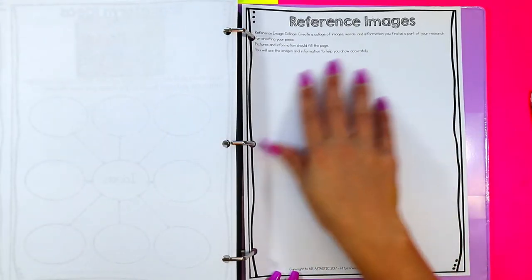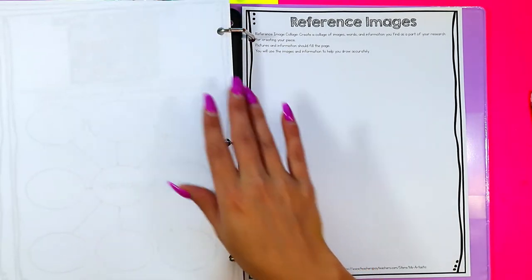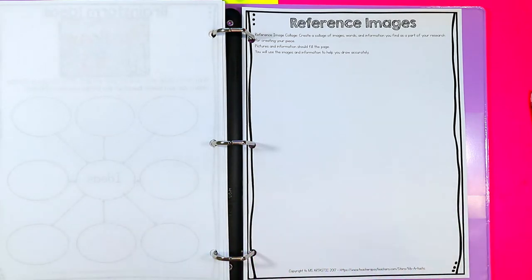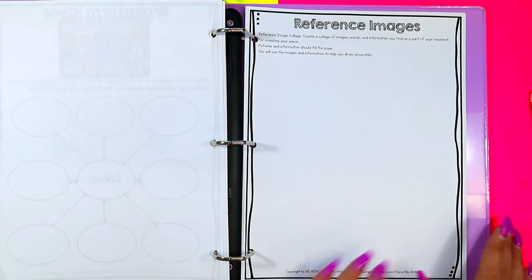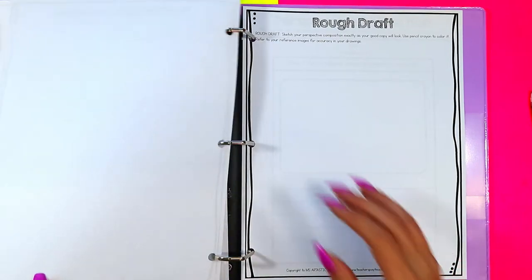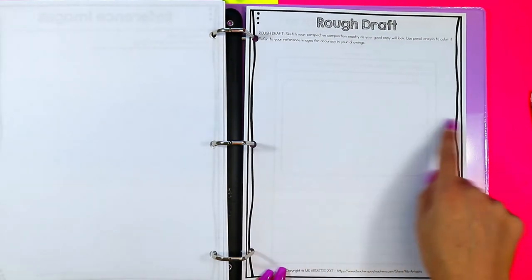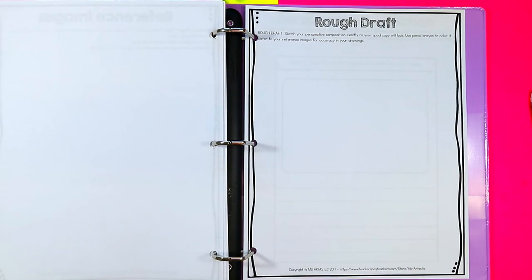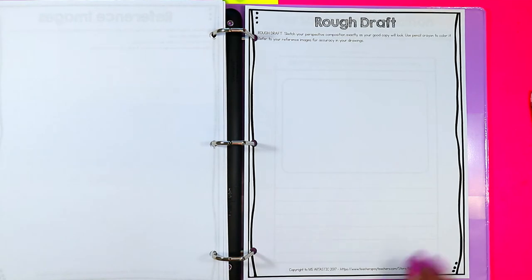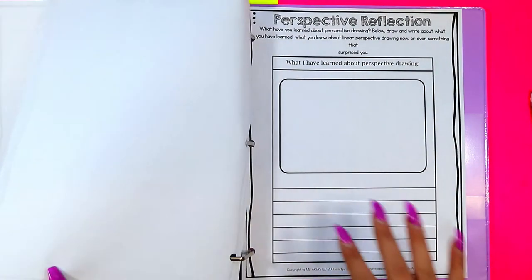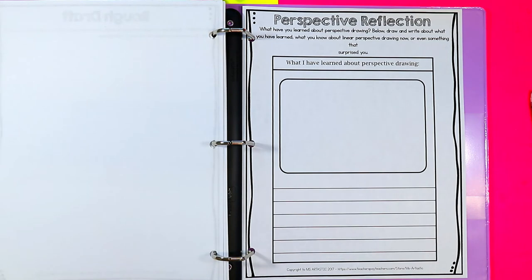They can glue in reference images. So if they find images online or maybe in magazines or they want to doodle, they can add that all here. They have a rough draft page. They can create their rough draft and also get you to approve it before they go ahead and create it. And then there's a bunch of pages for different reflections, student handouts for peer review and a rubric. And now we're going to dive on in and take a look at every single page that is included with this perspective unit.